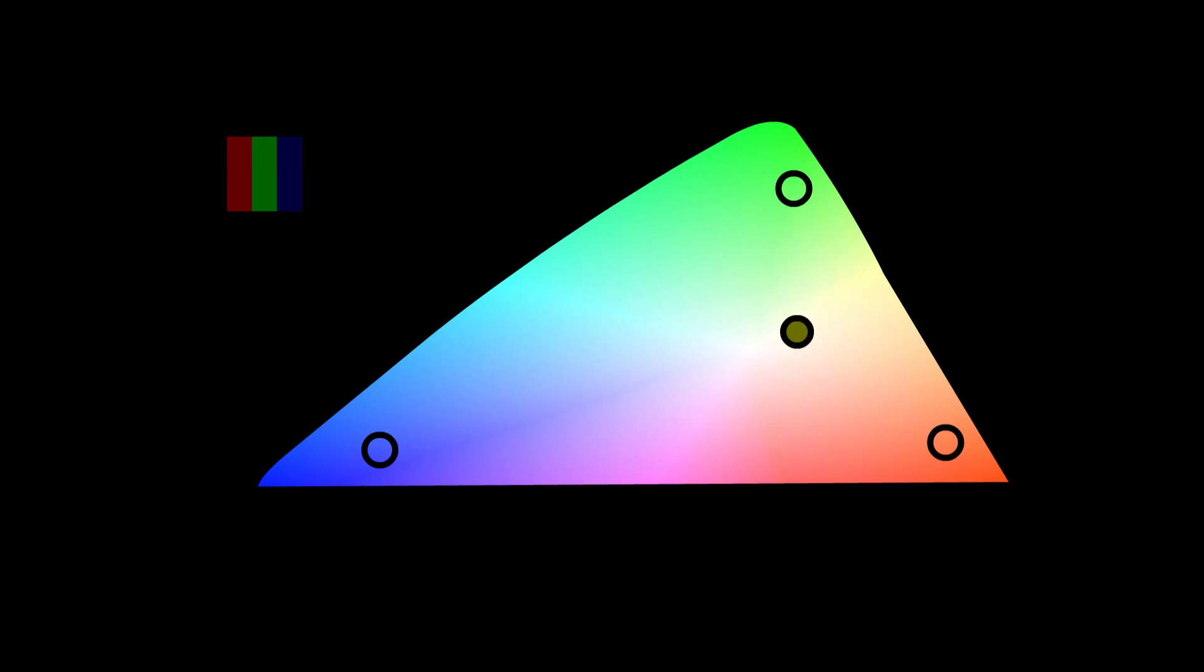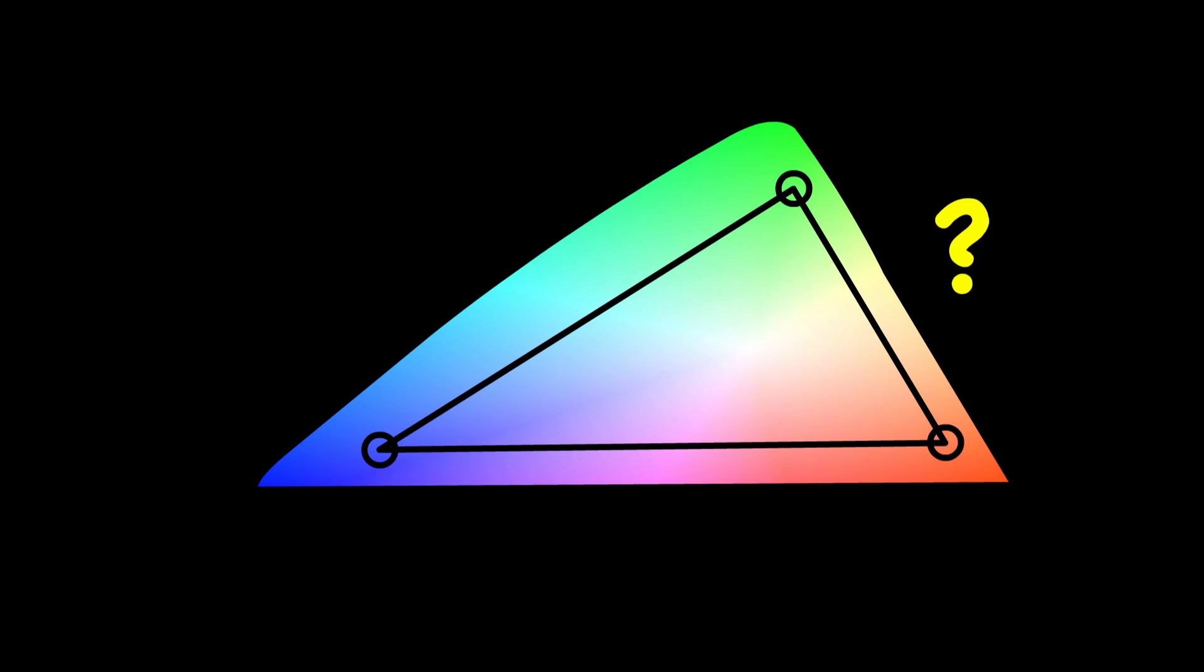Mixing them together, your screen can produce any color enclosed in this triangle. Now, where could we add a fourth pixel to increase this range in the yellow area? Look, there actually is a little more room for improvement. But even so, you're not honestly gaining that much.